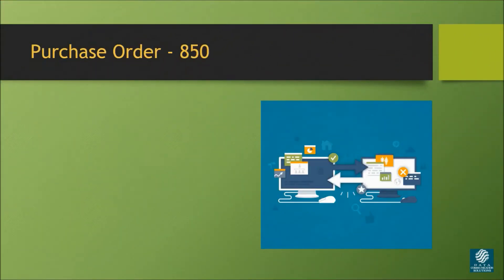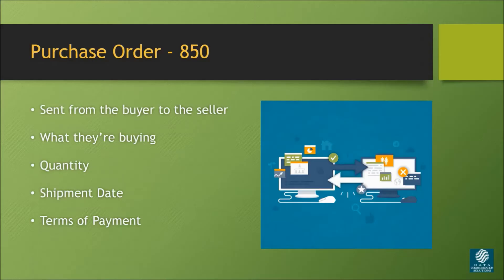In our previous video, EDI Explained, we went over a few of the X12 transactions commonly used in the manufacturing and retail industries. One of these transactions was the 850, or purchase order. To review, the 850 is sent from the buyer to the seller to communicate what they're going to buy, the quantity, shipment date, and terms of payment.